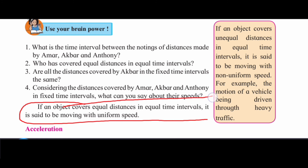If different distances are covered in equal time intervals, it is said to be non-uniform motion. Akbar's motion is non-uniform. For example, motion of a vehicle being driven through heavy traffic — sometimes you go at 30 km/h, sometimes faster or slower. When speed keeps changing, that is non-uniform motion. When speed remains constant, that is uniform motion.